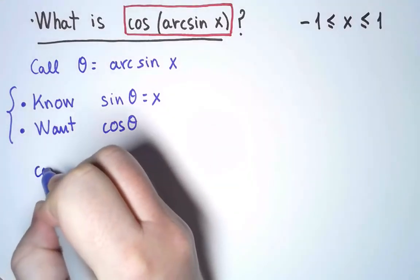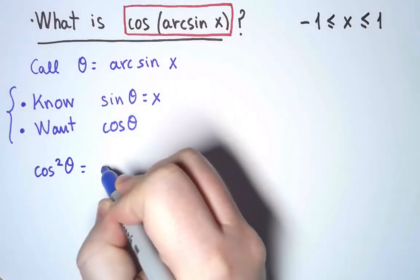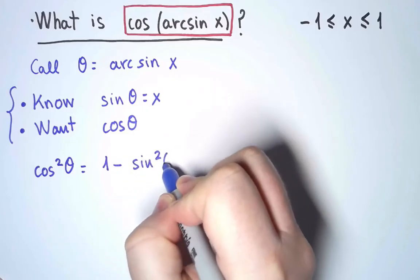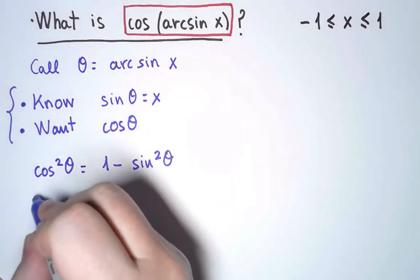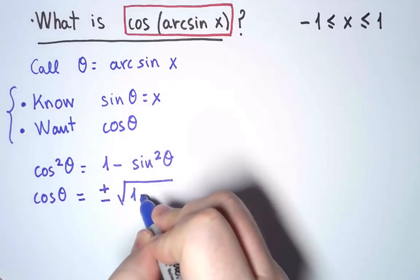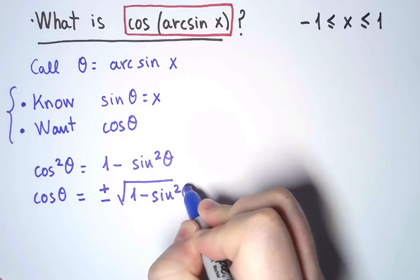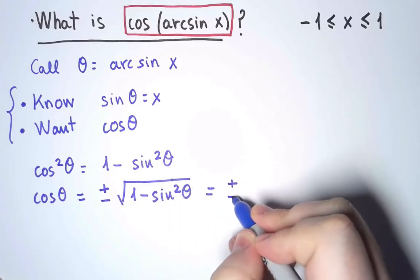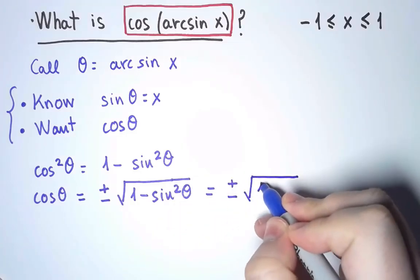I know that cosine squared of θ is 1 minus sine squared of θ. Therefore, cosine of θ is plus or minus the root of 1 minus sine squared of θ. Or simply plus or minus the root of 1 minus x squared.